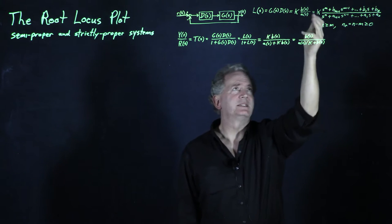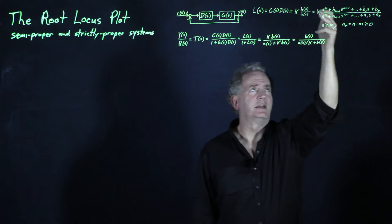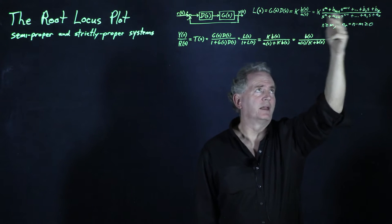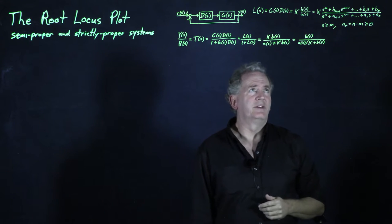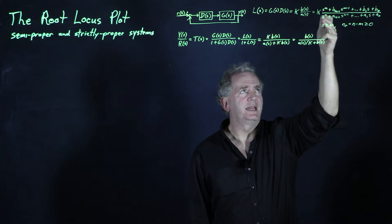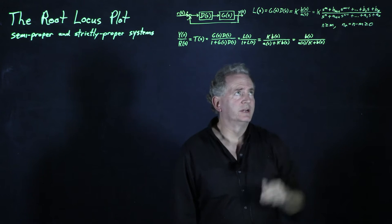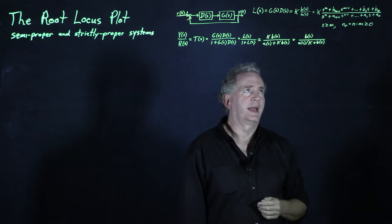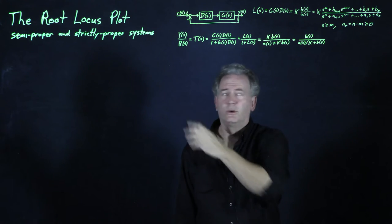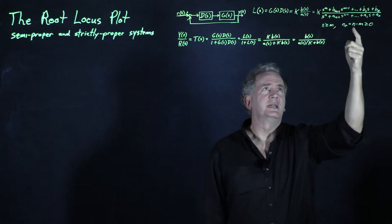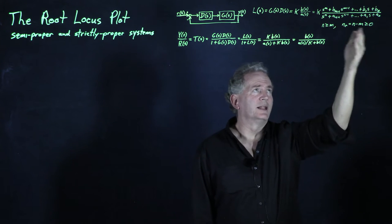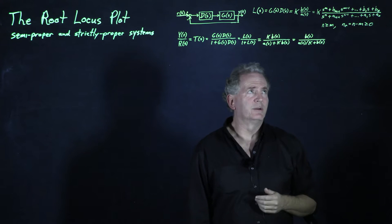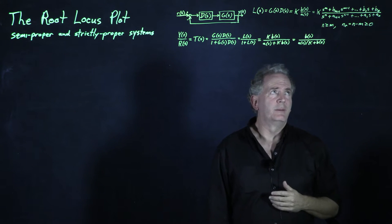Writing L(s) as a rational function of s — K times a monic polynomial of order M, denoted B(s) in the numerator, divided by a monic polynomial of order N, denoted A(s) in the denominator — we assume N is greater than or equal to M so that this rational function is proper. If N is greater than M, it is strictly proper; if N equals M, it is semi-proper. We denote N minus M as the relative degree, which is greater than or equal to zero.